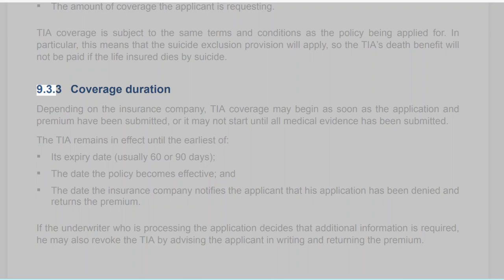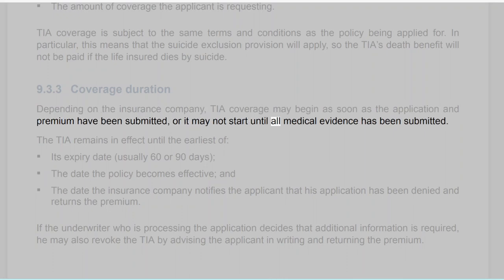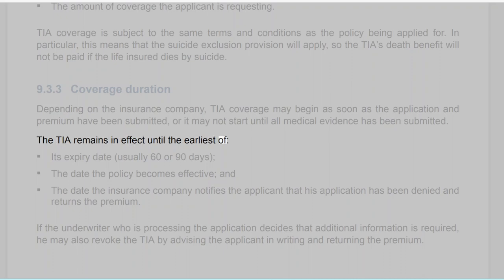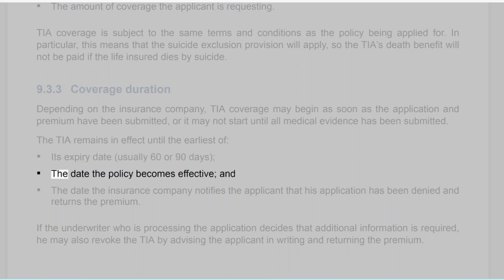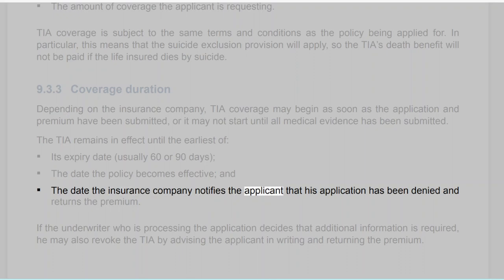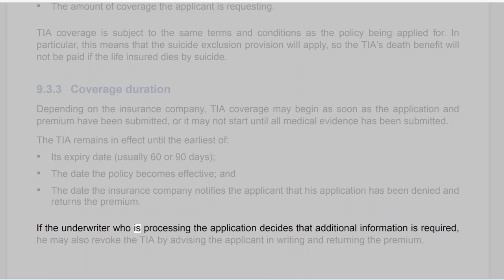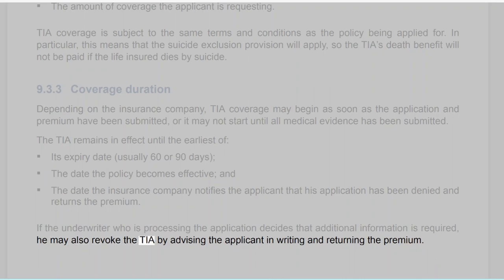Section 9.3.3: Coverage Duration. Depending on the insurance company, TIA coverage may begin as soon as the application and premium have been submitted, or it may not start until all medical evidence has been submitted. The TIA remains in effect until the earliest of its expiry date (usually 60 or 90 days), the date the policy becomes effective, or the date the insurance company notifies the applicant that his application has been denied and returns the premium. If the underwriter decides that additional information is required, he may also revoke the TIA by advising the applicant in writing and returning the premium.